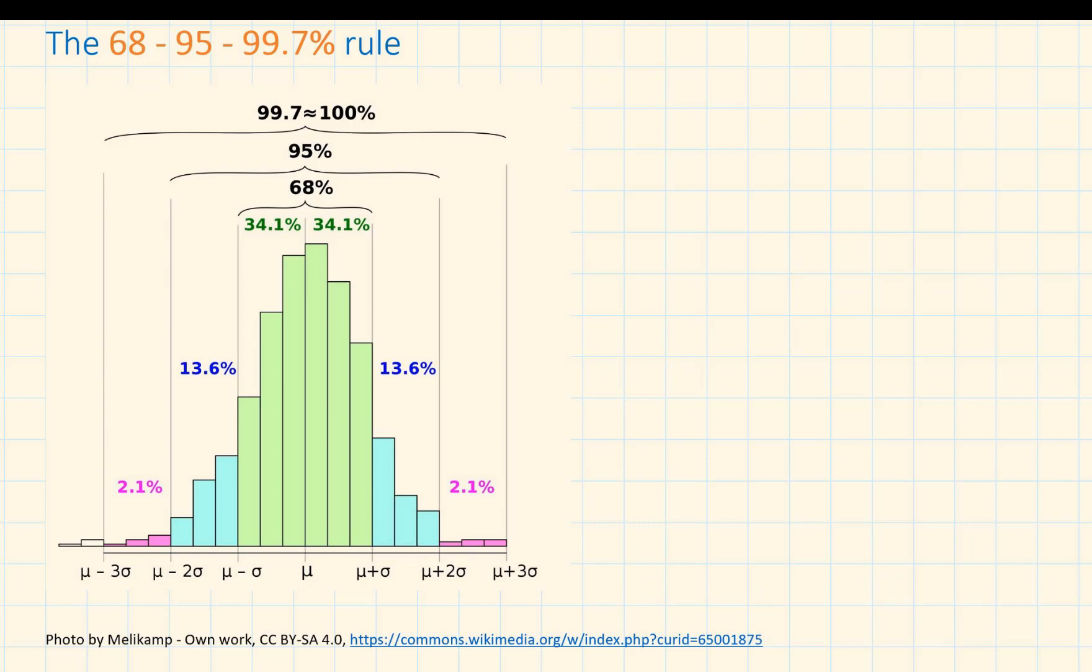The 68-95-99.7 rule. As represented in this graph, approximately 68% of the data lies within one standard deviation of the mean. Approximately 95% of the data lies within two standard deviations of the mean. Nearly all of the data, 99.7%, lies within three standard deviations of the mean.